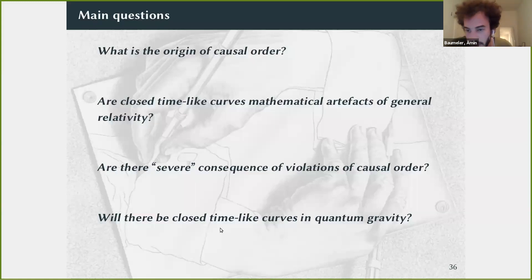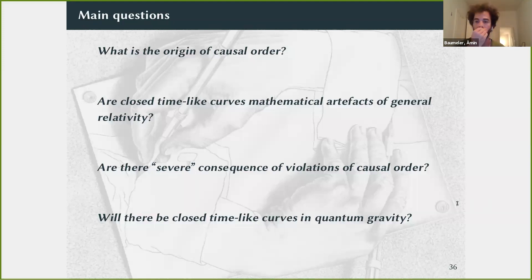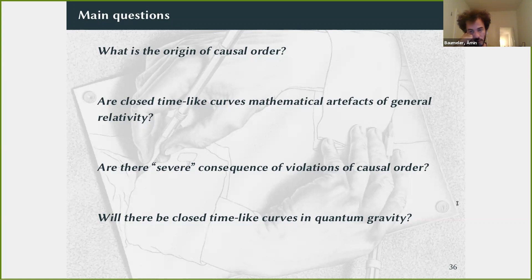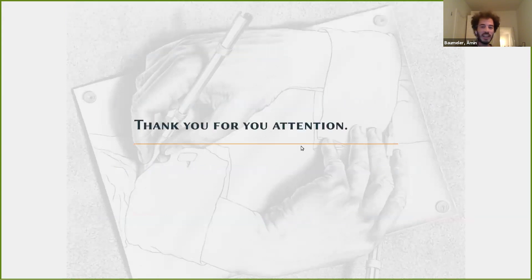Regarding string theory: it's not a conservative causality theory in the sense described here, because it's not an operational theory — we don't talk about Alice and Bob, and we don't assume some theory is locally true. Thank you for your attention.